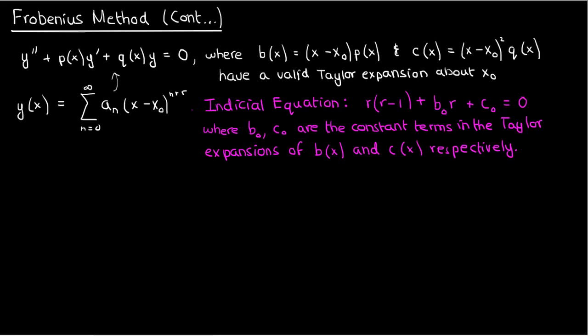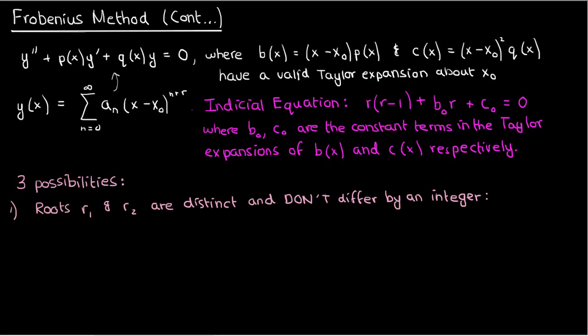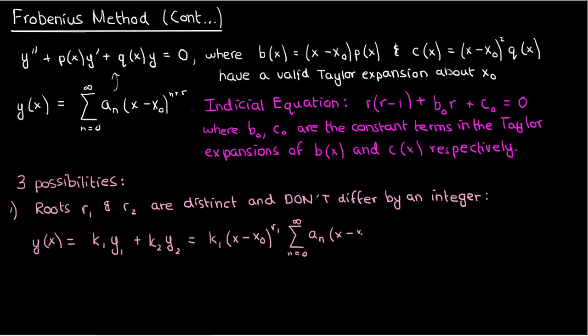When you solve the indicial equation to get two values of r, there are three main possibilities. The first is that the roots r₁ and r₂ are distinct and they don't differ by an integer — that's what we had in the example last time, where we got r = 0.5 and r = 1, differing by only 0.5. In that case, your general solution is k₁(x - x₀)^r₁ times the sum of aₙ(x - x₀)ⁿ plus k₂(x - x₀)^r₂ times the sum of Aₙ(x - x₀)ⁿ.